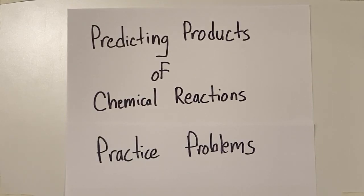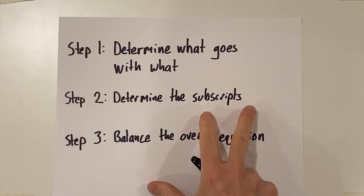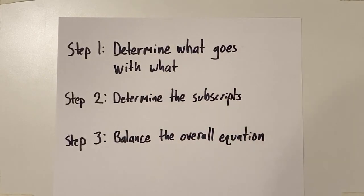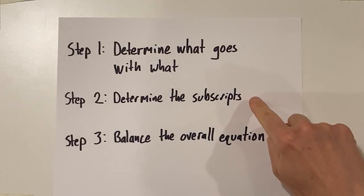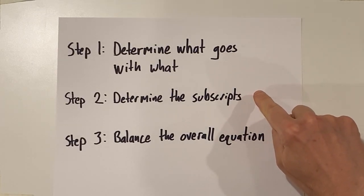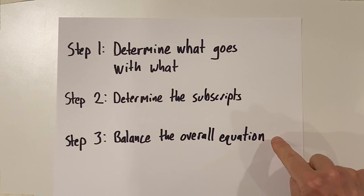Hi, this is Mr. Goma, and this video is predicting products of chemical reactions, practice problems. As with the first video we had on predicting products of chemical reactions, we'll go through these three steps to figure out the products. First, we'll determine what goes with what, then we'll figure out the subscripts on the products that we've formed, and last, we'll balance the overall equation.